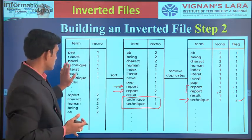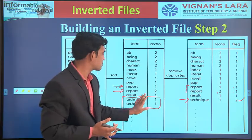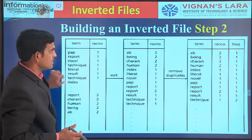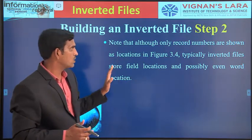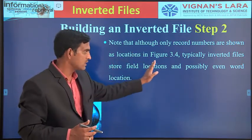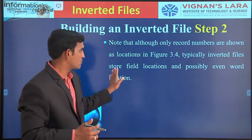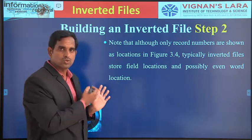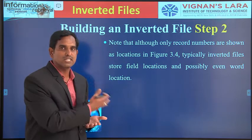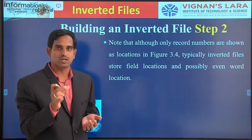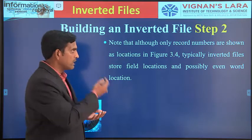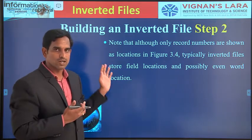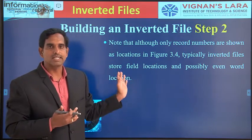So the three steps are: first, parsing; second, sorting by alphabetical order (inversion); third, removing duplicates within the same document. Note that although only record numbers are shown as locations in the figure, inverted files typically store field locations and possibly even word locations within the document. We will be looking at step three and other parts in the next session.